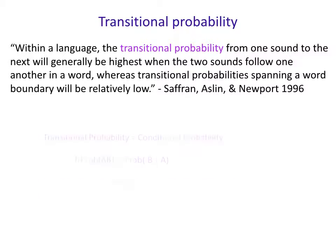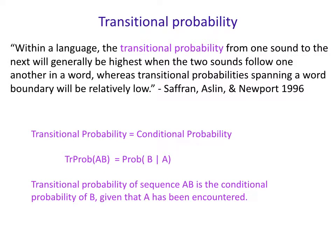So what is this? A transitional probability is just a conditional probability — we'll abbreviate it as 'trans prob.' The transitional probability of A followed by B, where these could be syllables or sounds, is just the conditional probability of B given that you've seen A. So transitional probability of the sequence A-B is just the conditional probability of B given that A has been encountered.